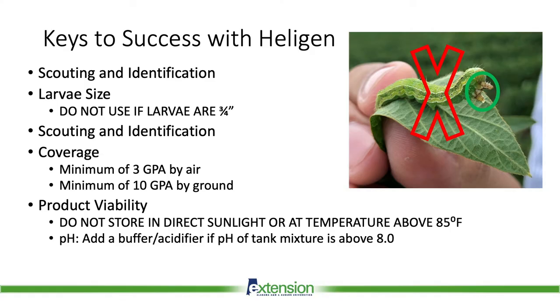Some keys to success with Helogen: scouting and identification are critical. We've talked a lot about the size of larvae — they've got to be hopefully a quarter of an inch, no longer than half an inch, to get the most effective efficacy out of the spray. If the majority of the larvae are greater than three-fourths of an inch, you're going to want to use a different product or at least tank mix with something that will provide immediate protection of the crop. Scouting and identification bear repeating because we've got to make sure we're looking at podworms and not velvet bean caterpillars or something like that.